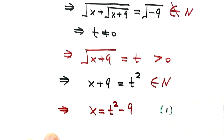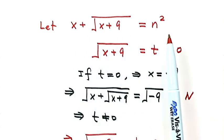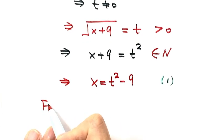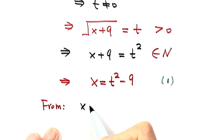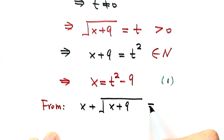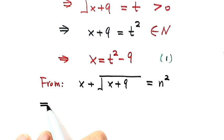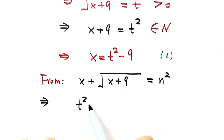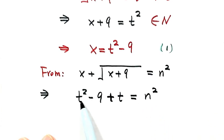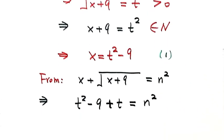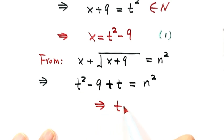Now let's do the substitution. From the first equation, x plus the square root of x plus 9 equals n squared. We use t squared minus 9 to replace x, and t to replace the square root of x plus 9. So we have t squared minus 9 plus t equals n squared. Because n squared, t squared, and 9 are all positive integers, t must be a positive integer.